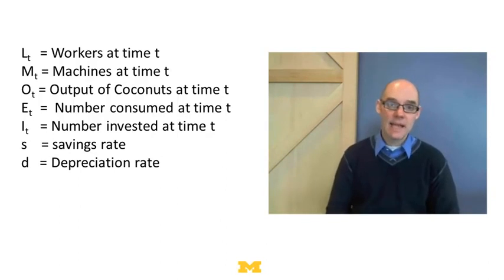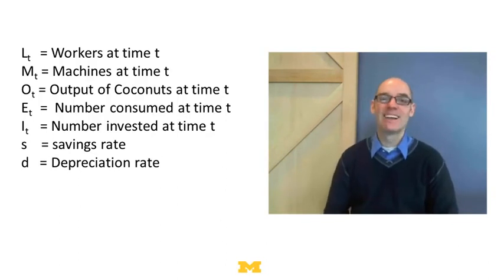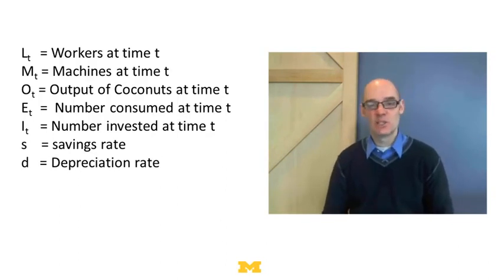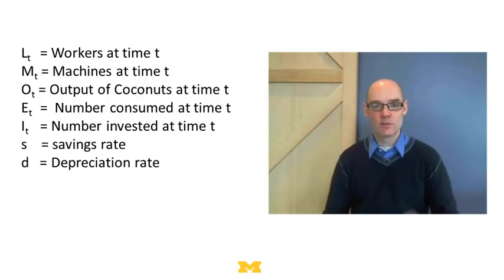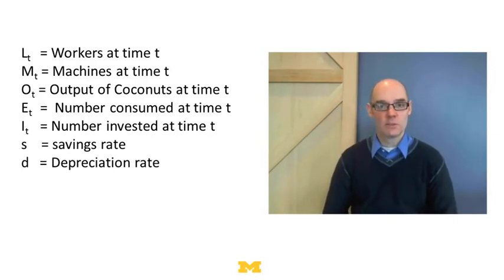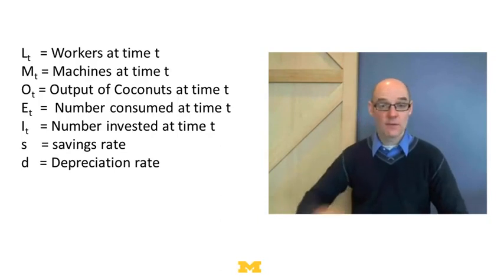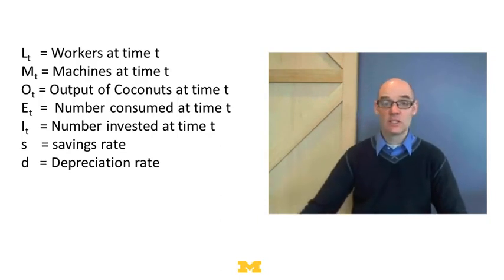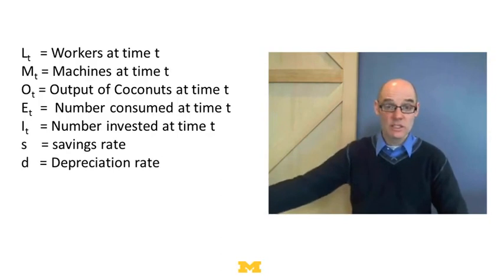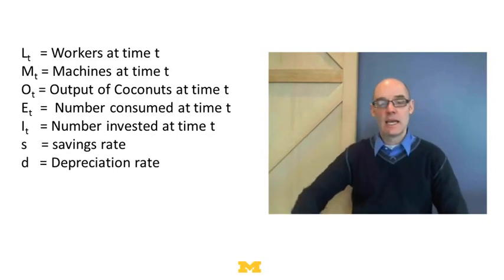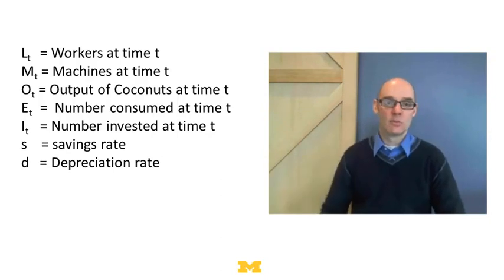The last thing in the model is the depreciation rate — the rate at which these machines wear out. We're just going to assume that some fixed percentage of the machines wear out each period. That's a simplification, but we're going to use it. So: workers, machines, coconuts — the coconuts get eaten or turned into more machines — and there's depreciation.